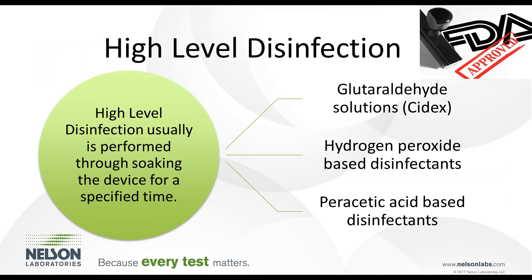For high level disinfection, some chemicals commonly used include glutaraldehyde, which is the most common in the U.S. — Cidex is a common trade name. Hydrogen peroxide and peracetic acid are also used for high level disinfection, and these are typically chemicals used in the European market, whereas glutaraldehyde is predominantly used in the U.S.